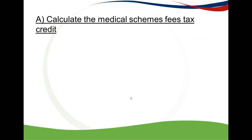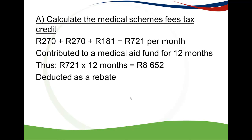First, calculate Rose's Medical Schemes Fees Tax Credit. It's a fixed amount: $270 for the first two people on the medical aid, and $181 for each person thereafter — these are rates per month. So she gets $270 (for Rose) + $270 (for her husband) + $181 (for her son) = $721 per month. Since she contributed for 12 months, we multiply by 12. If she had only contributed for 10 months, we would multiply by 10 instead.